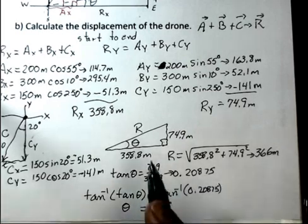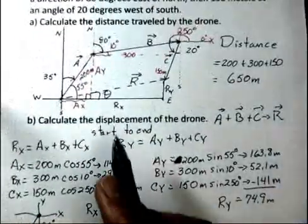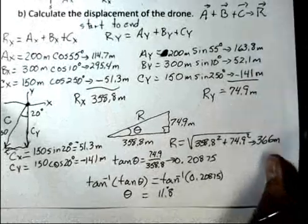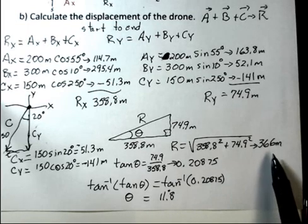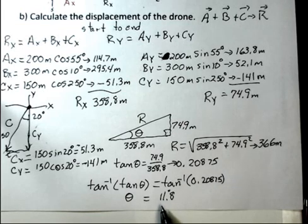And that matches our drawing to some extent. We have a relatively small angle here. The calculation is the exact result to three significant figures. 11.8 degrees. We've determined the displacement is 366 meters with an angle to the x-axis of 11.8 degrees.